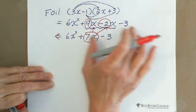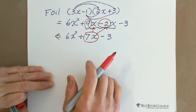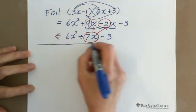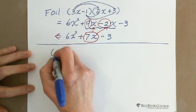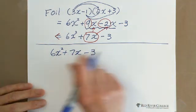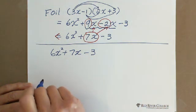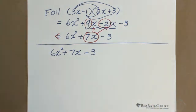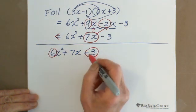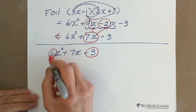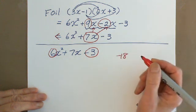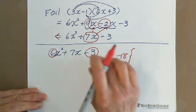After we find those two numbers, we do grouping. So for the question 6x squared plus 7x minus 3, we are looking for two numbers that multiply together to give us the first coefficient times the last constant: 6 times negative 3 equals negative 18.